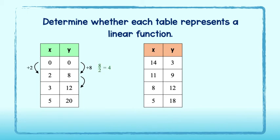From 8 to 12, I add 4. And from 2 to 3, I add 1. This gives me a rate of change of 4 over 1, or 4.